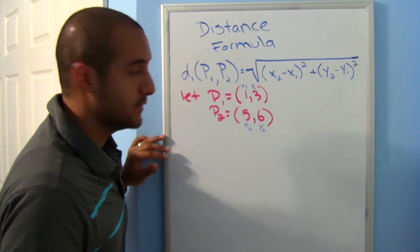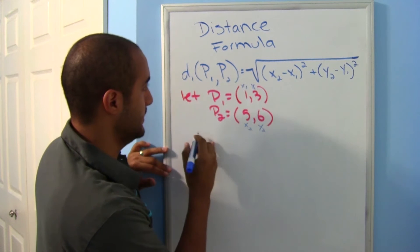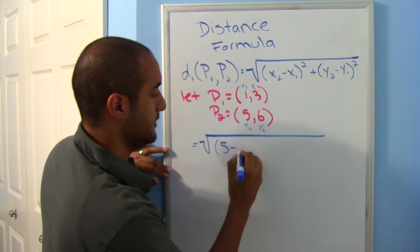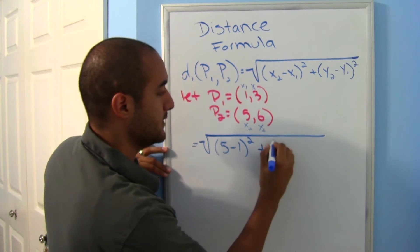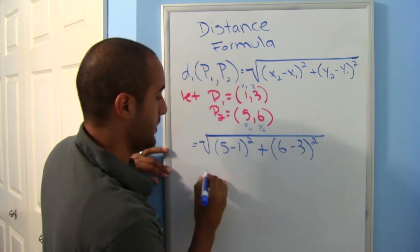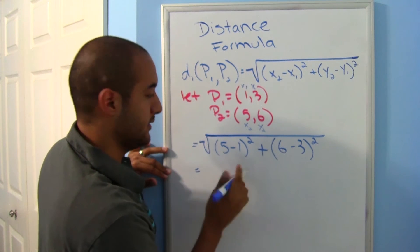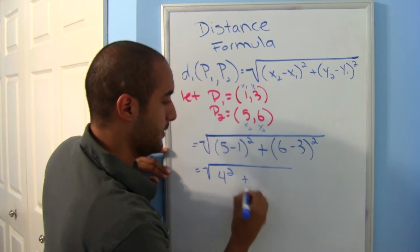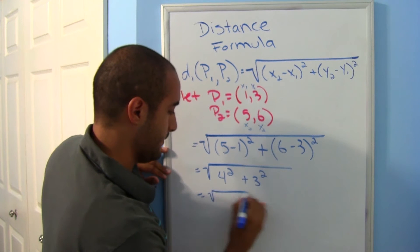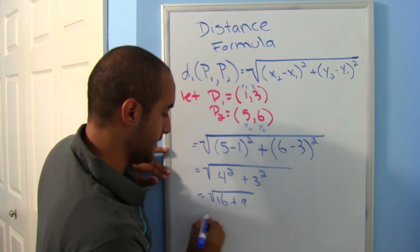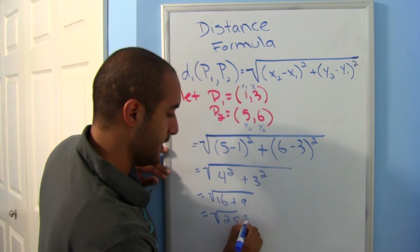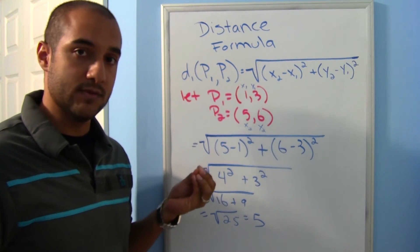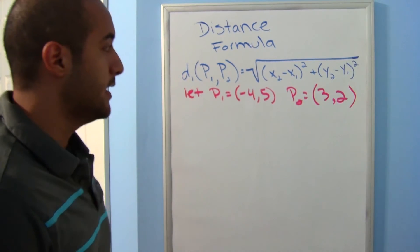Substituting in: the distance equals the square root of (5 − 1)² + (6 − 3)². Taking care of the parentheses first: that's 4² + 3², which is 16 + 9 = 25. The square root of 25 is 5. So these two points are 5 units away from each other.